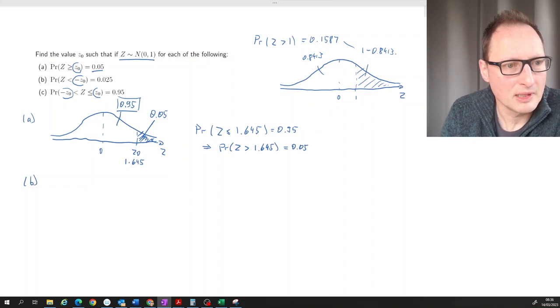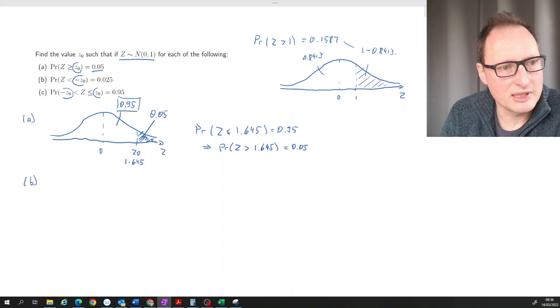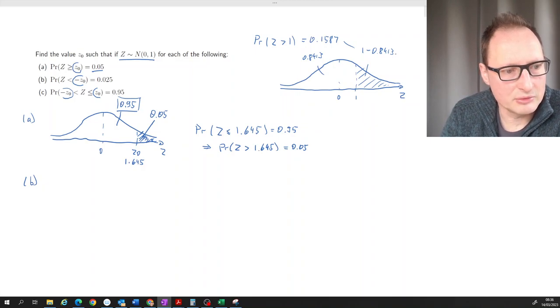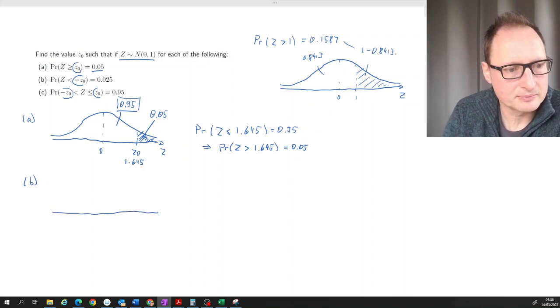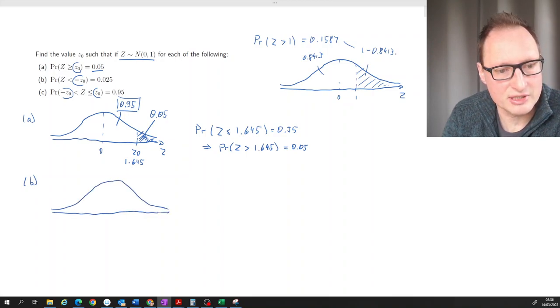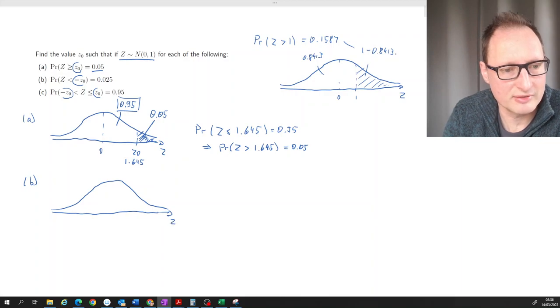Second part of the question, part (b): probability that z is smaller than a certain negative value. Again we'll start with a sketch, and don't try to save on the sketches when you solve these questions - that is a false saving.